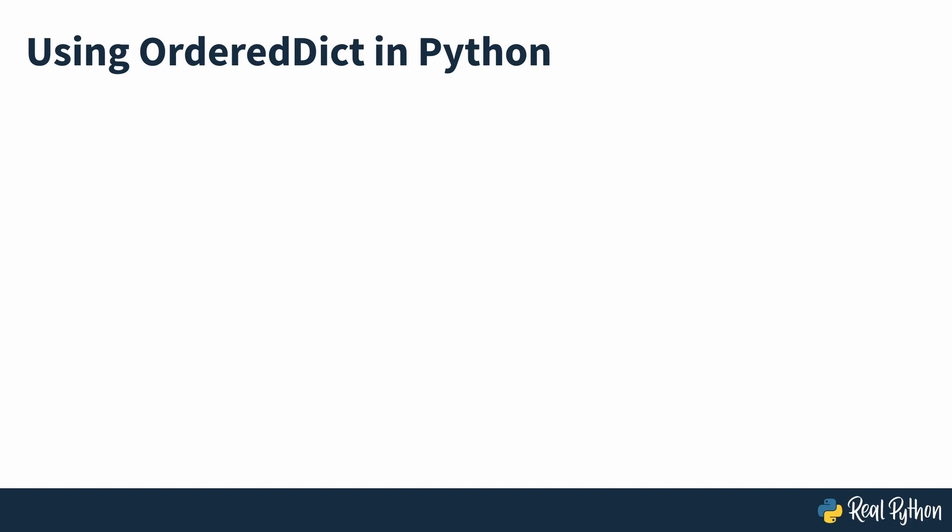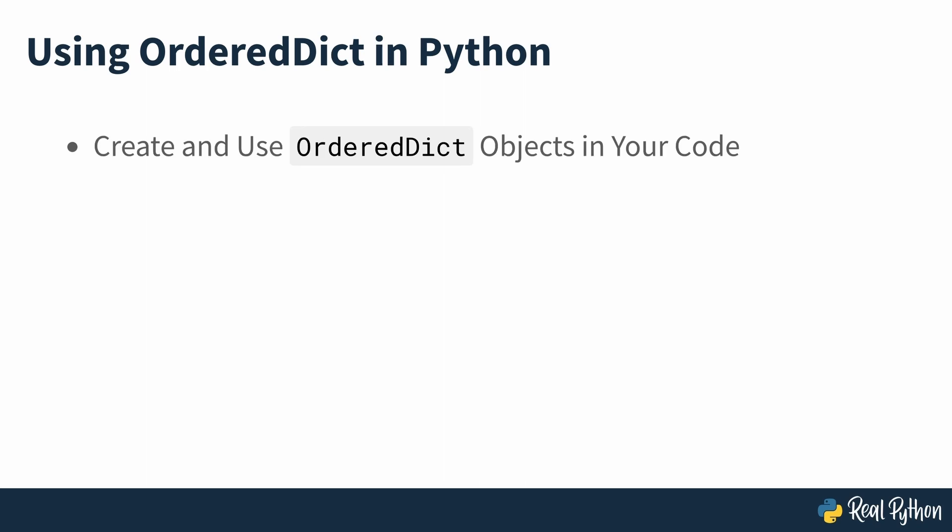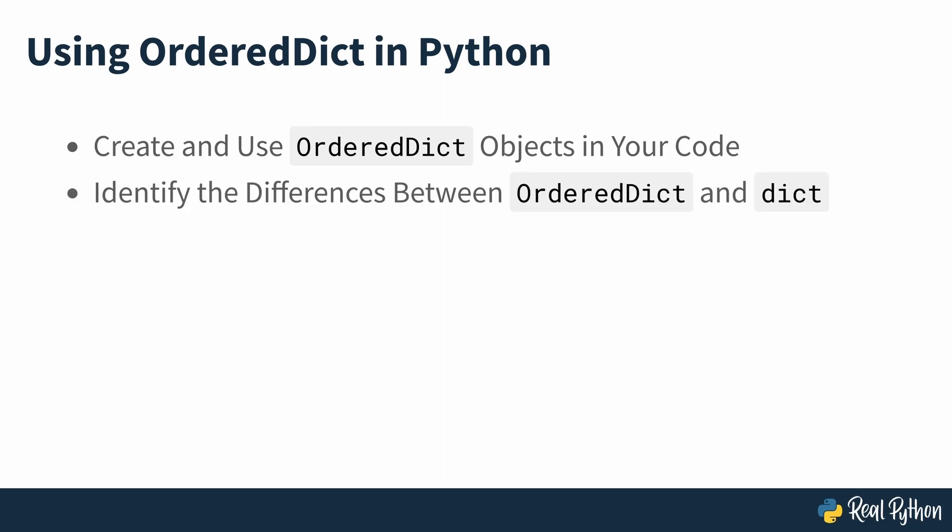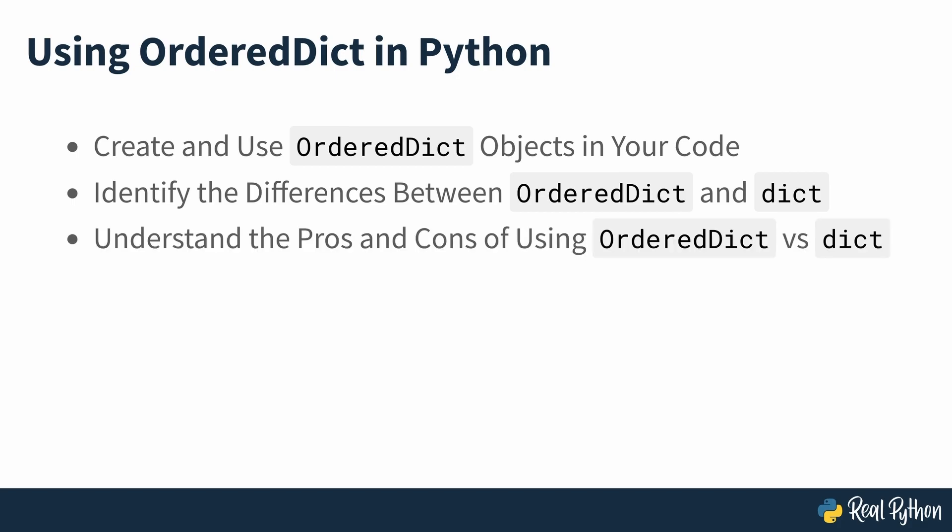In this course you'll learn how to create and use OrderDict objects in your code, identify the differences between OrderDict and Dict, and understand the pros and cons of using OrderDict versus Dict. With this knowledge you'll be able to choose the dictionary class that best fits your needs when you want to preserve the order of items. By the end of the course you'll see an example of implementing a dictionary-based queue using OrderDict, which would be more challenging if you used a regular dictionary.